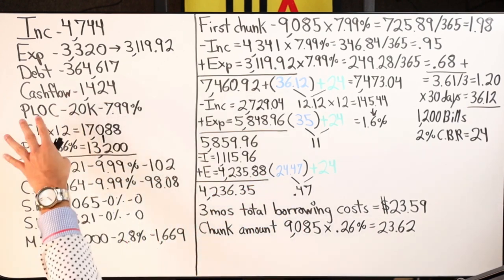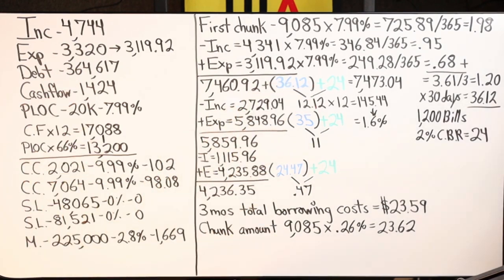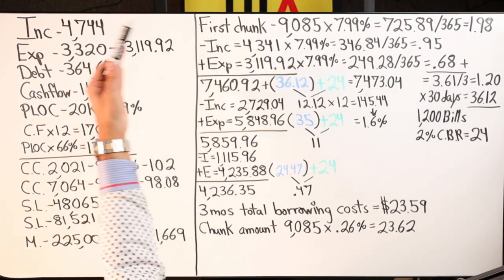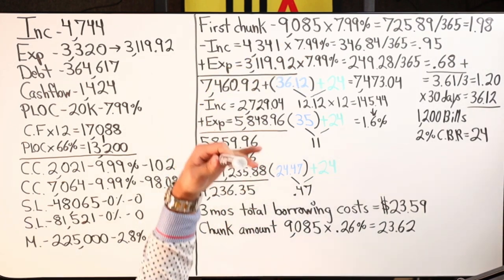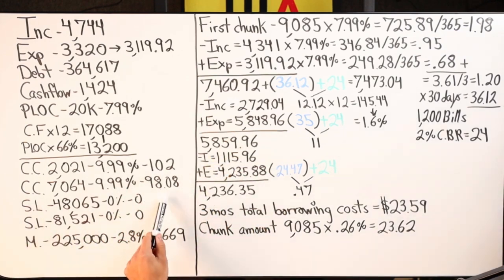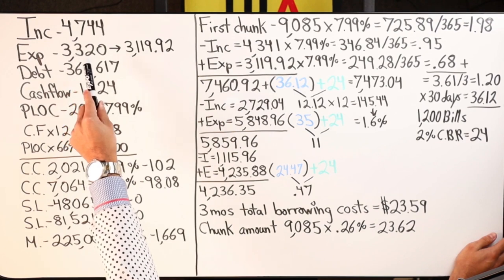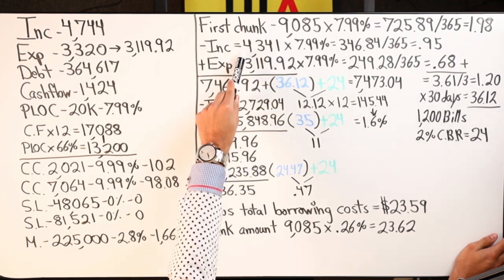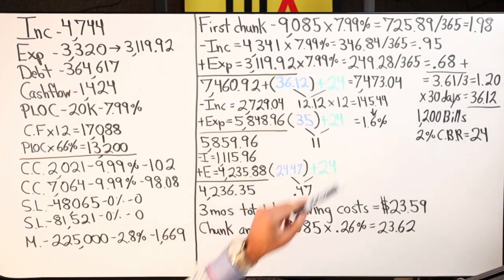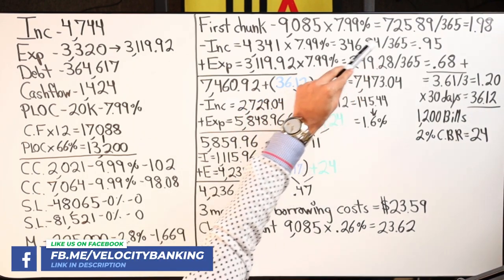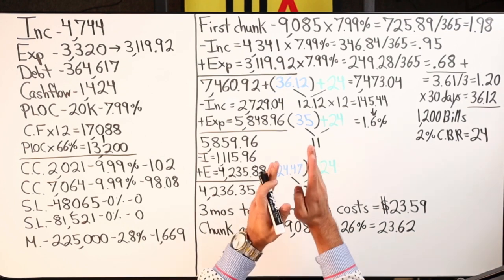Now we amp it up — step two is velocity banking. Instead of just using leftover free cash flow each month, we use our entire income to pay off the nine thousand eighty-five dollars extremely fast. Top of the month, make the first chunk — nine thousand eighty-five dollars — done. The one hundred two and ninety-eight dollars and eight cents go back into cash flow. Income goes in: four thousand seven hundred forty-four minus it from nine thousand eighty-five, you get four thousand three hundred forty-one. Times that by seven point nine nine — that's three hundred forty-six dollars for the whole year, down from seven twenty-five.